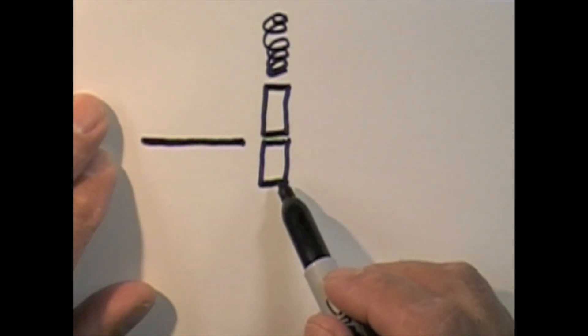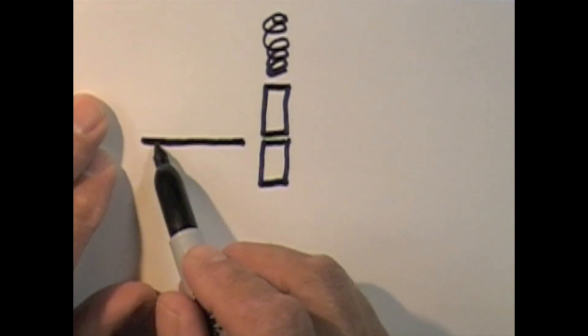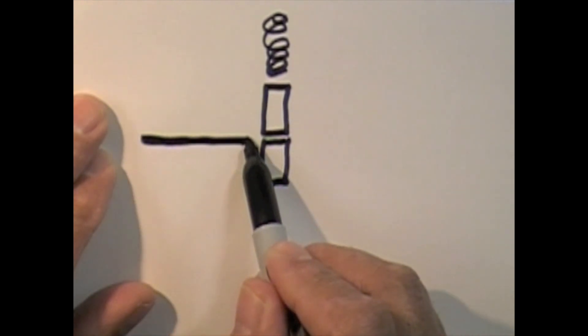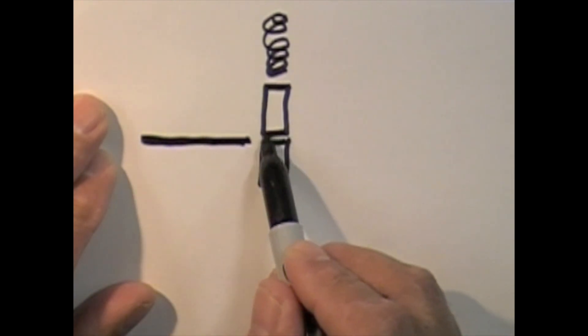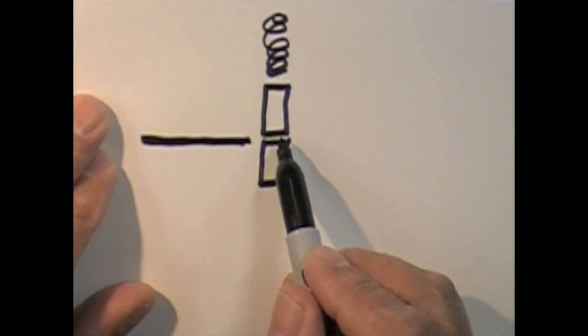So we're going to use a pick or something to lift up on this bottom pin and at the same time we're going to push this shim stock between the top pin and the bottom pin.